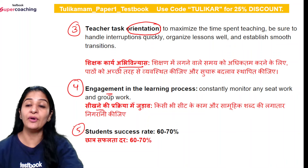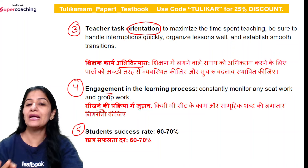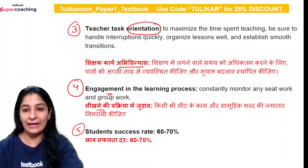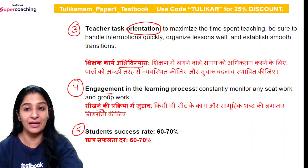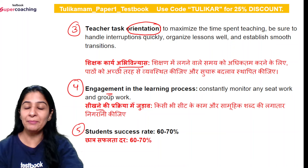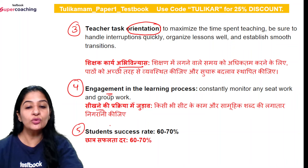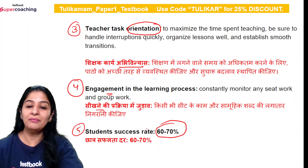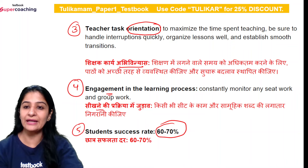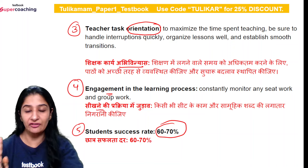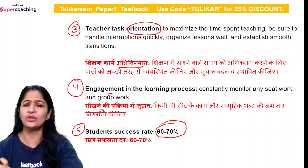The fifth and last key behavior is the Student Success Rate. This means students are able to do what they have studied. If students demonstrate a 60 to 70% success rate on the content being taught, then you can understand the content is being grasped. A student success rate of 60 to 70% indicates that the class is very effective. These are the five key behaviors that are fundamental.